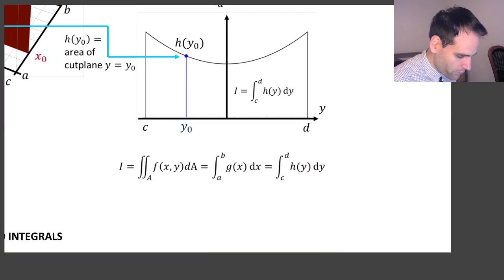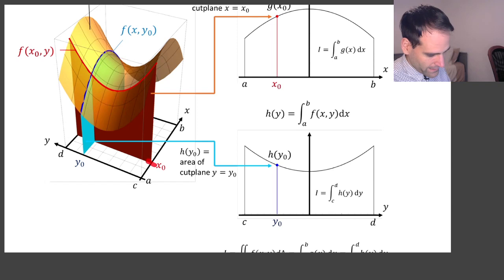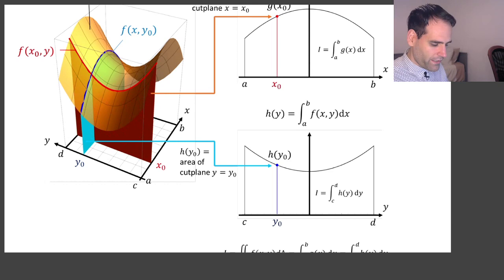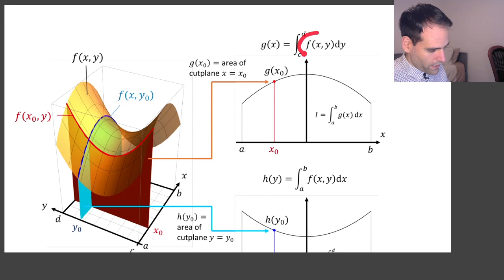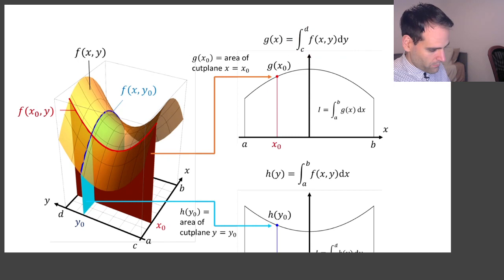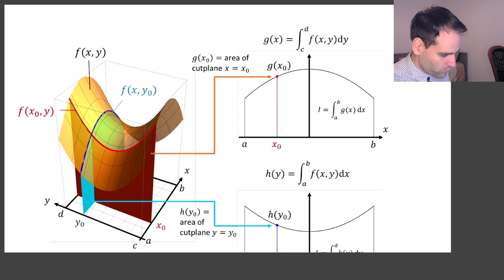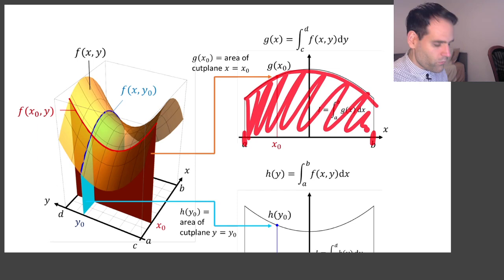The key thing to realize is that the order doesn't matter. Instead of fixing y and looking at that cross-section, we could have fixed x. If we fix x, we have this cross-section, shown as this red area here. This red area is the integral of f(x,y) with respect to y between y = c and y = d, which defines a function g(x). The height of this function represents the area, and this area depends on x. When we change x, we change the cross-section and therefore this function. Integrating this function between x = a and x = b gives the area under this function, which equals the volume under the original f(x,y).